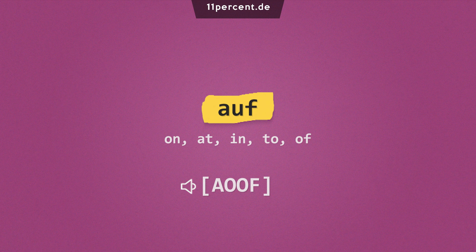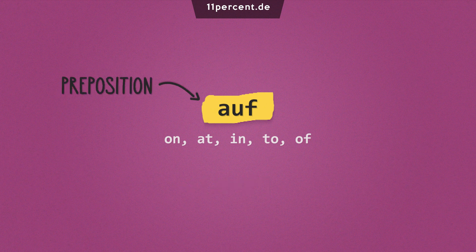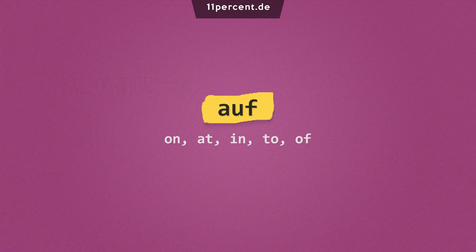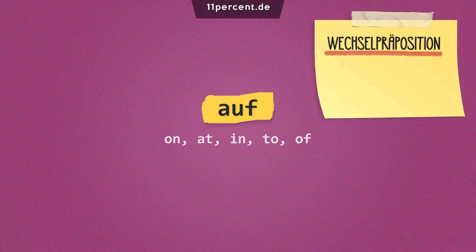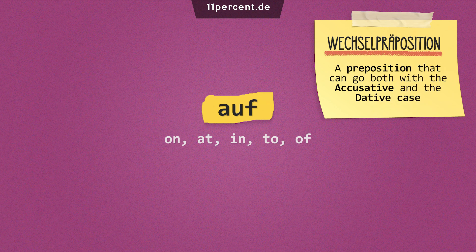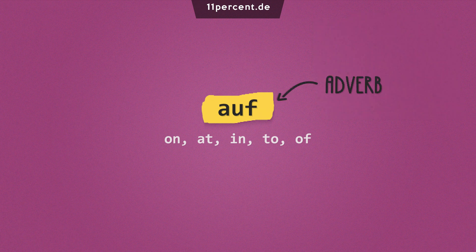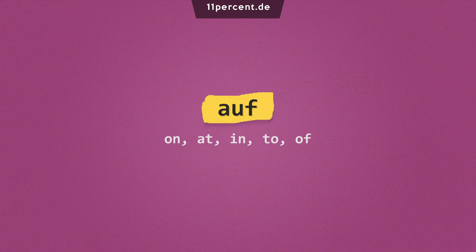Auf is a preposition that can mean on, at, in, to, or off, depending on the phrase. Auf can come with words in dative or accusative, meaning it's a Wechselpräposition — but more on that a little later. Auf can also be an adverb in phrases with the verb sein, and we talk more about this in a separate video about 'Auf sein.' However, it is mostly used as a preposition. So let's check it out in some examples.